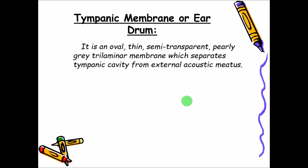The tympanic membrane is an oval, thin, semi-transparent, pearly-gray, trilaminar membrane. It has three layers and separates the external ear from the tympanic cavity (middle ear). Maximum size is 9 to 10 millimeters and minimum is 8 to 9 millimeters.